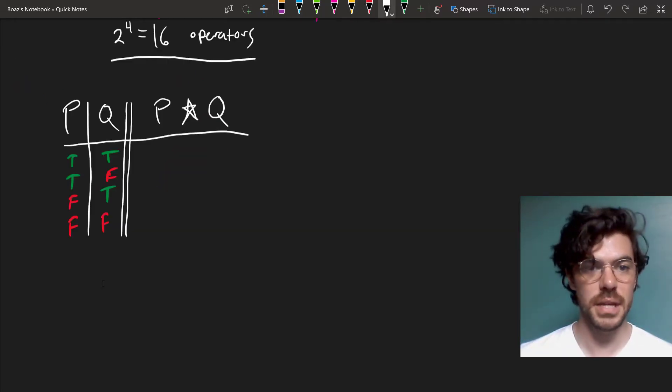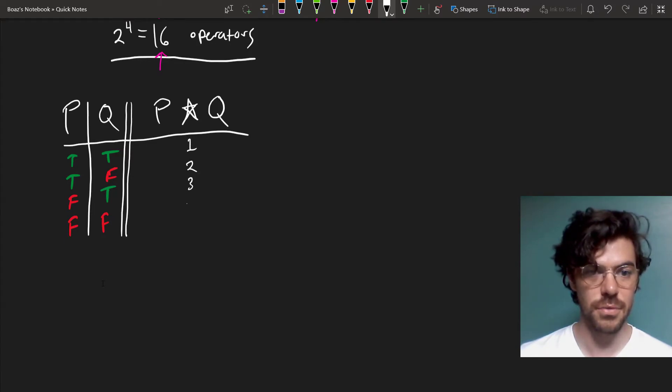So let's take a star to be our new operator that we wish to define, and we want to show that we can make star correspond to any one of these 16 we happen to want up here. The way to think about this is not in terms of Ts and Fs, but more generally in terms of values. So we have the first value up here, the second value, the third value, and the fourth value.